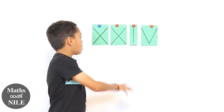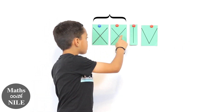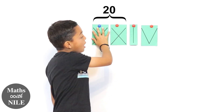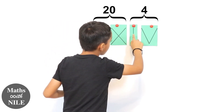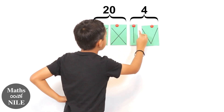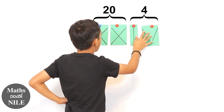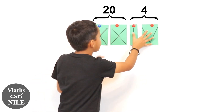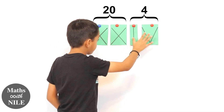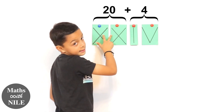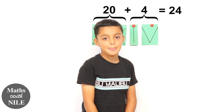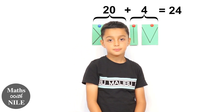So XX plus X is 20, and then 4 is IV because the smaller number is in front so you take it away - it's 5 take away 1 which is 4. And then because the smaller number in all of this, which is 4, is after, then you add it with the 20 so it's 24. Excellent, very good explanation.